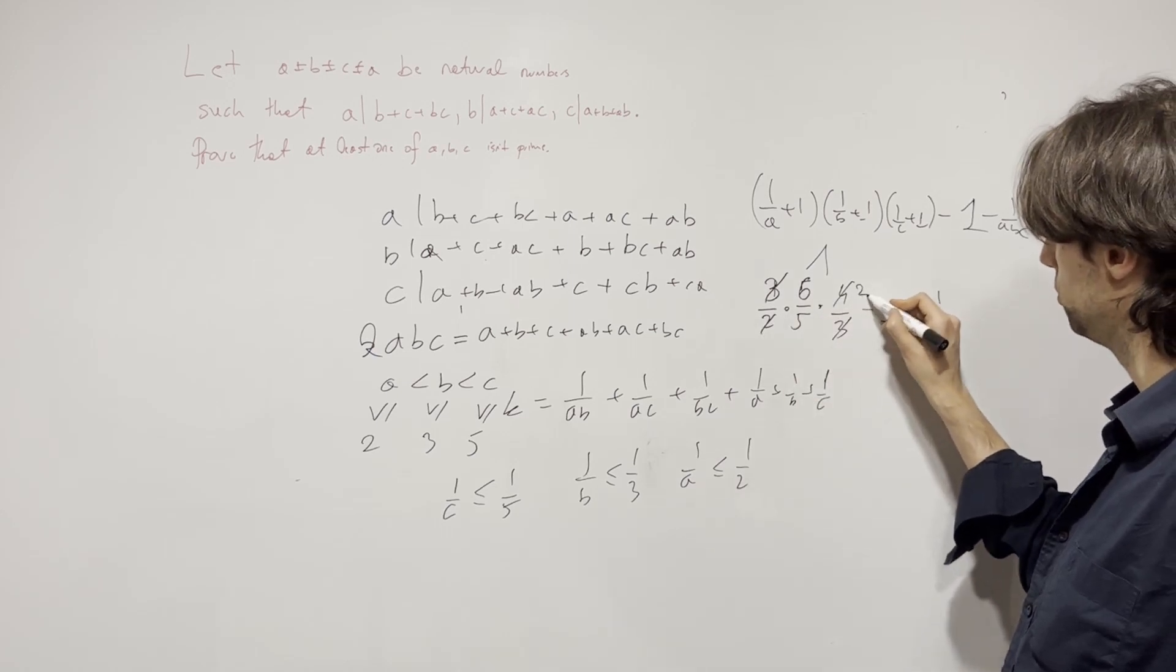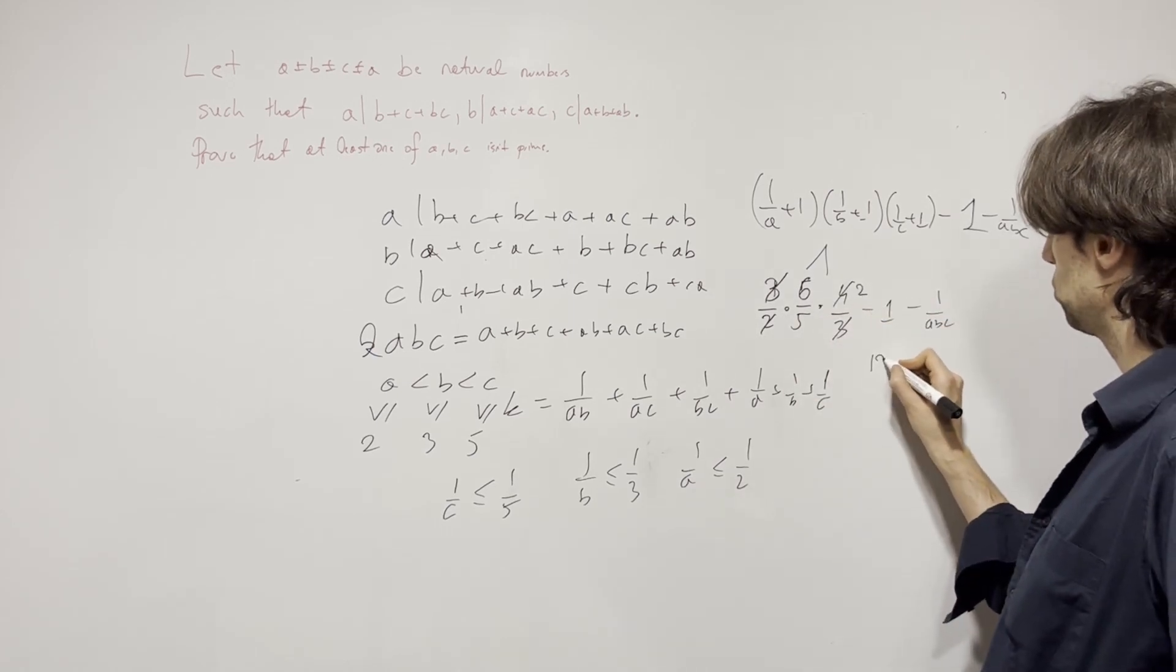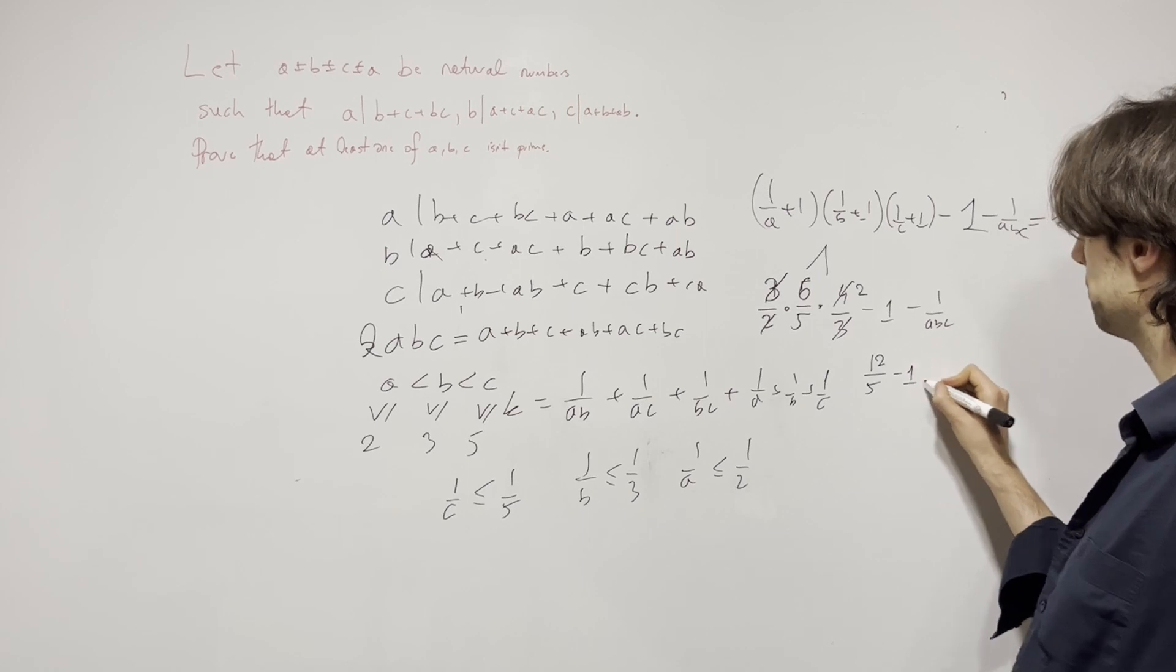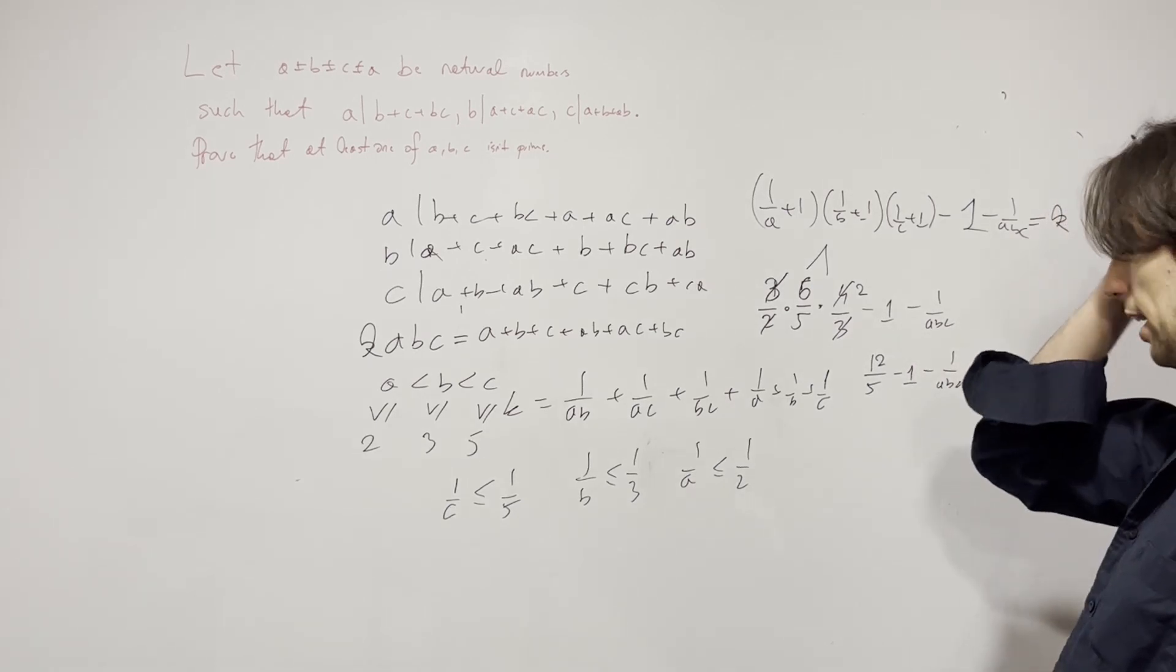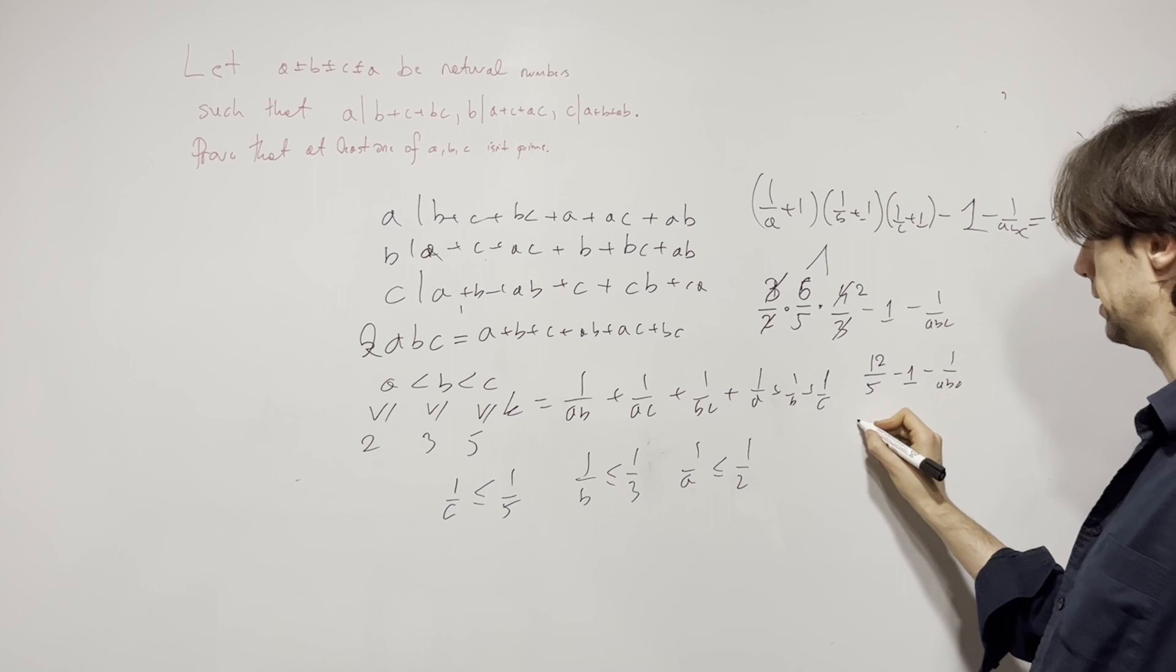You're going to have a BAM, BAM, BAM, 2 left, 12 over 5, minus 1, minus 1 over ABC.